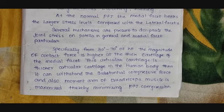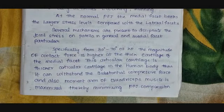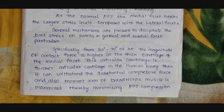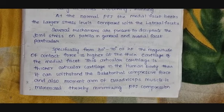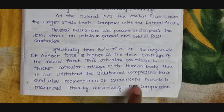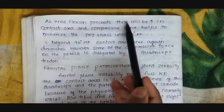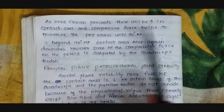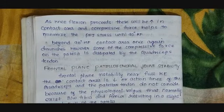The second supportive mechanism is that the moment arm of the quadriceps muscle at this range of motion is considered to be higher. When there is an increased moment arm, there will be increased torque with less force, and the moment arm of the quadriceps muscle is maximized, thereby minimizing the patellofemoral joint compression. As knee flexion proceeds, there will be an increase in contact area, and compressive force helps to minimize the patellofemoral joint stress until 90 degrees of knee flexion. So there are three mechanisms that help in dissipating patellofemoral joint stress: thicker medial articular cartilage, greater moment arm, and increased contact area — all helping to dissipate patellofemoral joint stress up to 90 degrees.